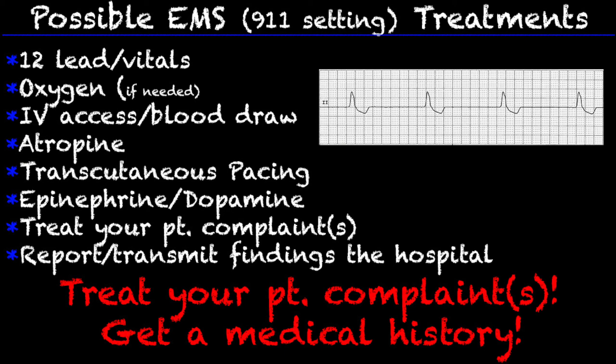Treat your patient's complaint — what are they complaining of? If you have a living, breathing, talking patient in front of you, definitely talk to them and gauge how they're feeling. Always report and transmit your findings to the hospital, and get a great medical history. You want to know if anything like this has ever happened before. One of the causes of idioventricular rhythms is drug toxicity — it could be digoxin toxicity or something like that — so ask what medications they've taken, because that could have led to the rhythm as well.